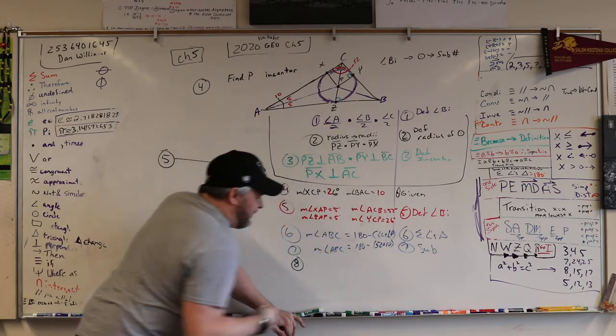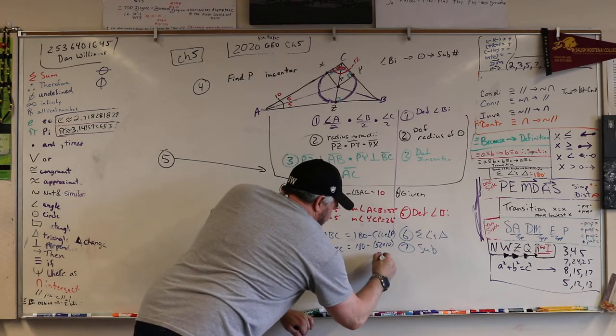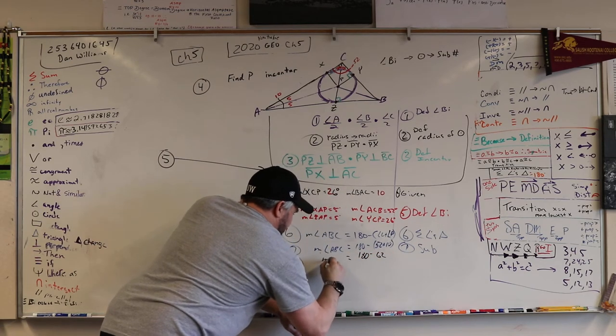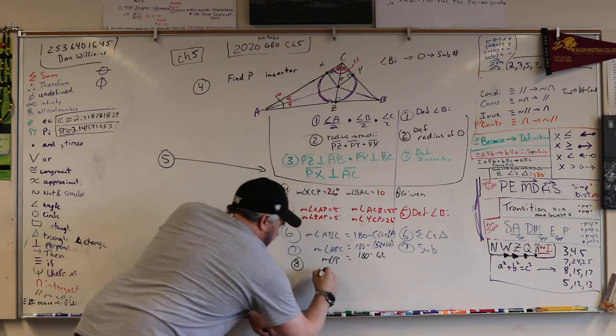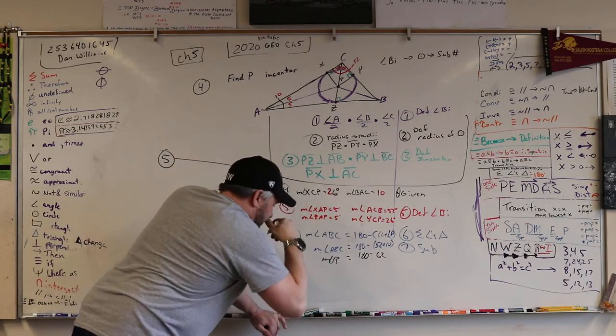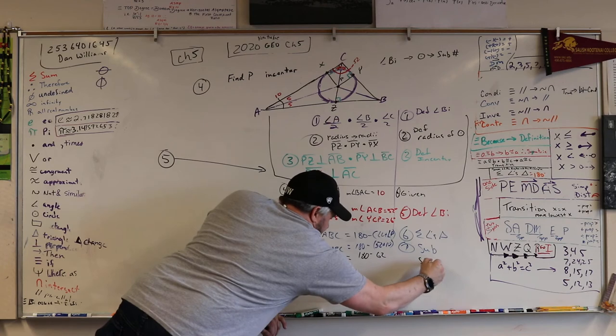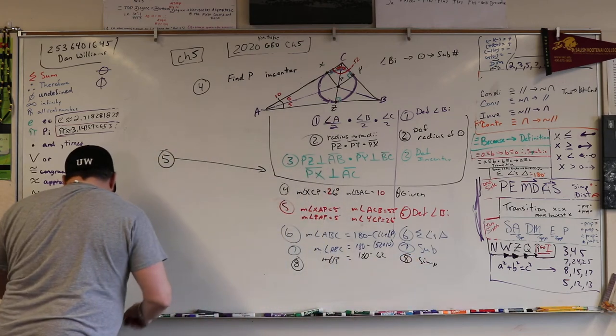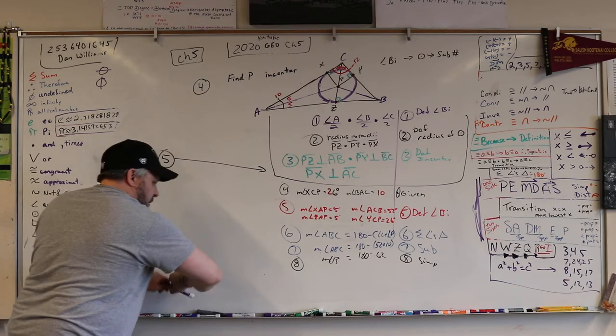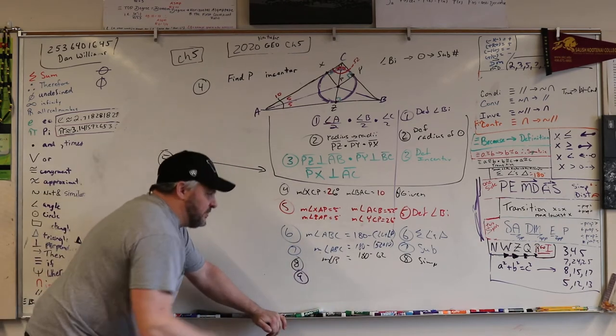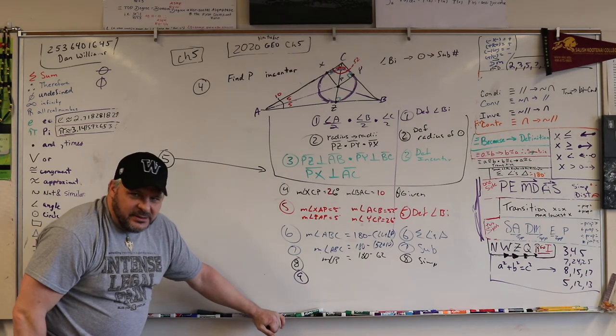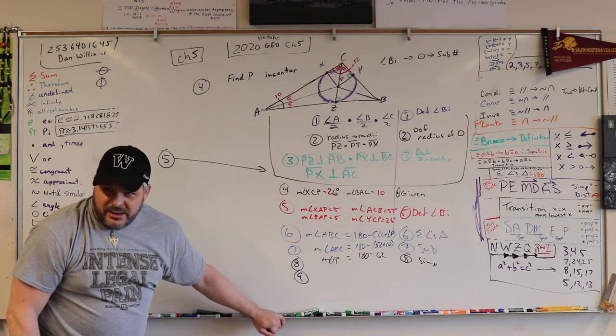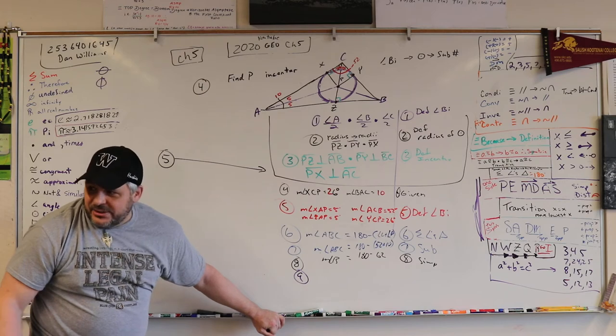So I got 52 and 10 is 62. So 180 minus 62 is equal to the measure of B. And so that was simplified. Eight and then nine. What's that nine? Well, what is 180 minus 62? So 180 minus 60 would bring us down to 120. It's 120 minus 2, 118.